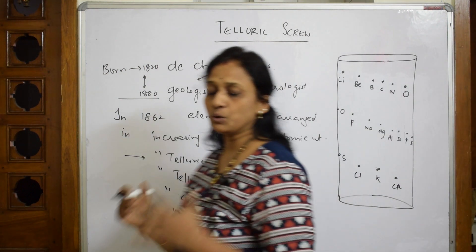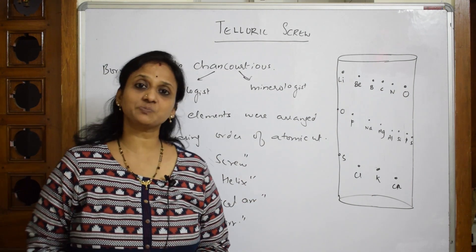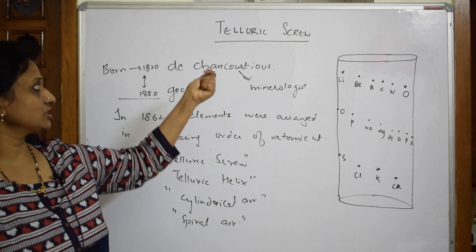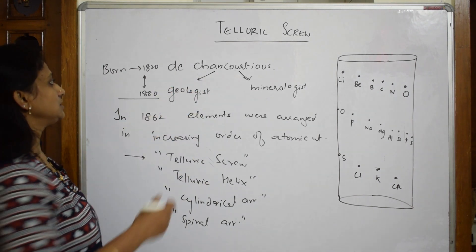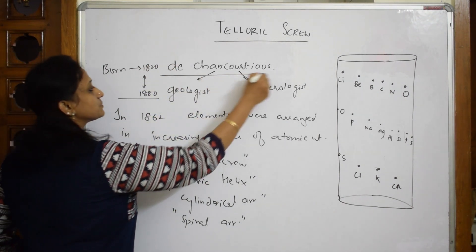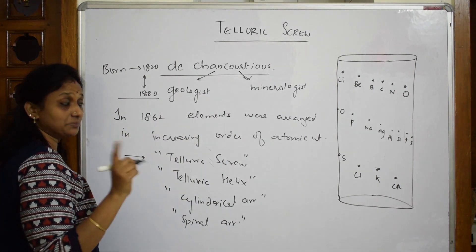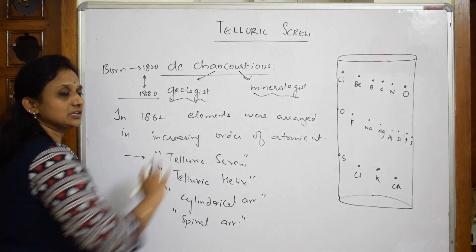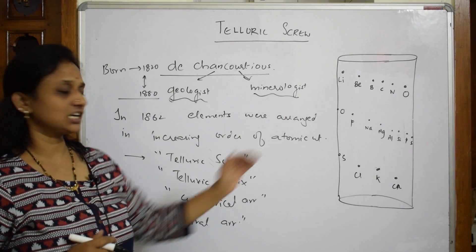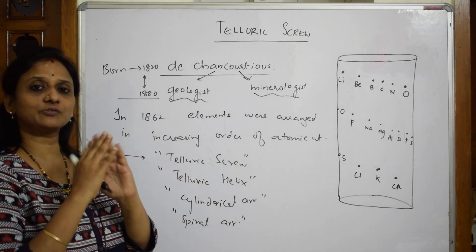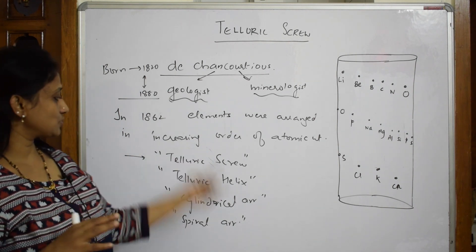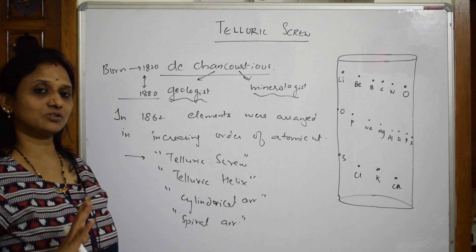Everything was arranged in increasing order. But properly, he could not submit his papers so it was not accepted. Just remember, telluric screw was given by De Chancourtois. He is not a chemist. He is a geologist as well as a mineralogist. Whatever he has got, he has arranged according to the increasing atomic mass and placed it in the form of a cylinder, that white paper which is folded. This is the thing and not much information.